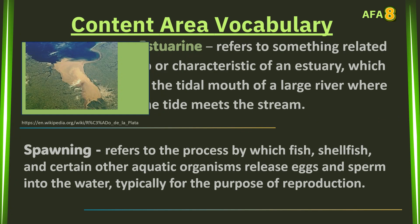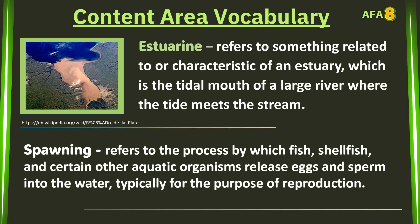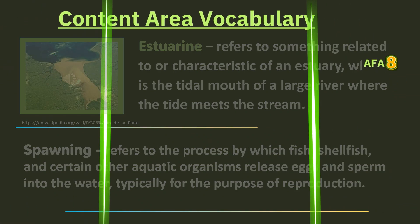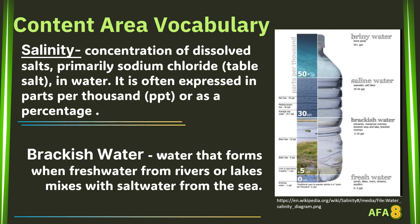The following are the content area vocabulary. Estuarine — this refers to something related to or characteristic of an estuary, which is the tidal mouth of a large river where the tide meets the stream. Spawning — refers to the process by which fish, shellfish, and certain other aquatic organisms release eggs and sperm into the water, typically for the purpose of reproduction. Salinity — concentration of dissolved salts, primarily sodium chloride (table salt), in water, often expressed in parts per thousand (ppt) or as a percentage. Brackish water — water that forms when fresh water from rivers or lakes mixes with salt water from the sea.